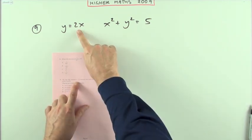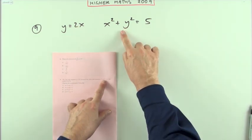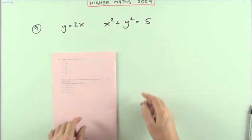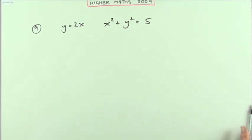Number 9 then. The line with the equation y equals 2x intersects this circle, x squared plus y squared equals 5, at 2 points, j and k. What are their coordinates?